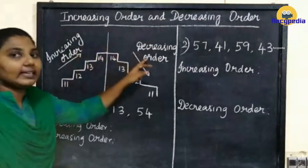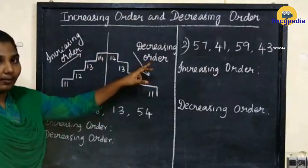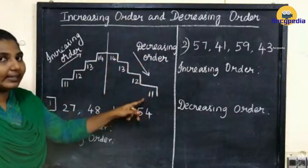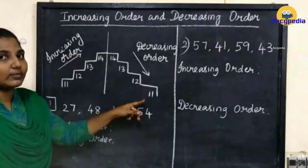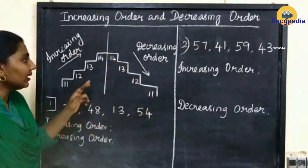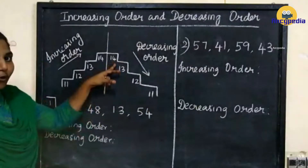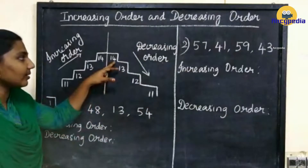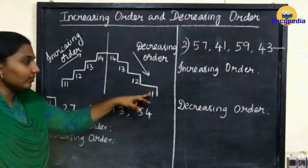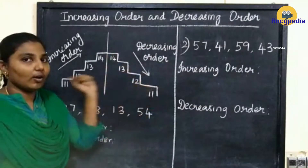Next, decreasing order. Decreasing order means we have to write the numbers from larger to smaller. In decreasing order, we have to write the numbers from larger to smaller. Here, which one is larger? 14, right? So we have to write the numbers from 14, next 13, next 12, next 11. So this is decreasing order.